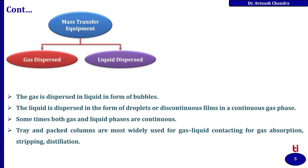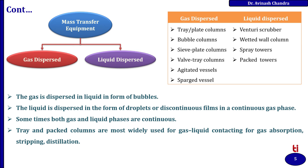Tray and packed columns are most widely used for gas-liquid contacting for gas absorption, stripping, and distillation. For gas dispersed equipment, the list includes tray or plate column, bubble column, sieve plate column, bubble tray column, agitated vessel, and sparged vessel. For liquid dispersed equipment, the list includes venturi scrubber, wetted wall column, spray tower, and packed tower.